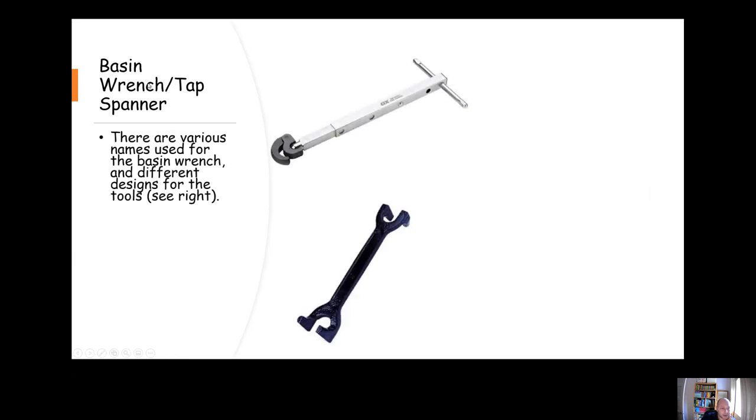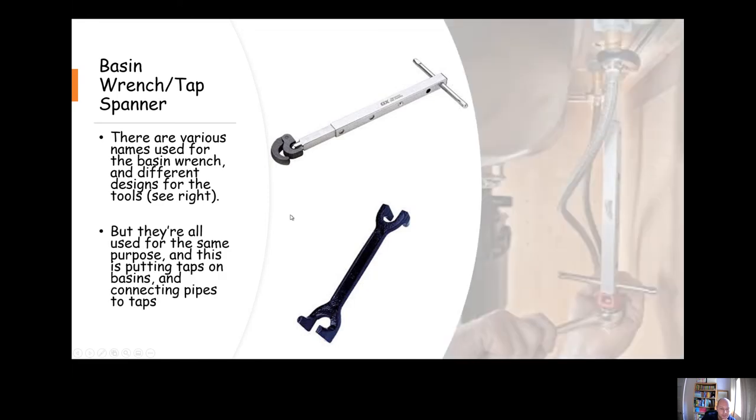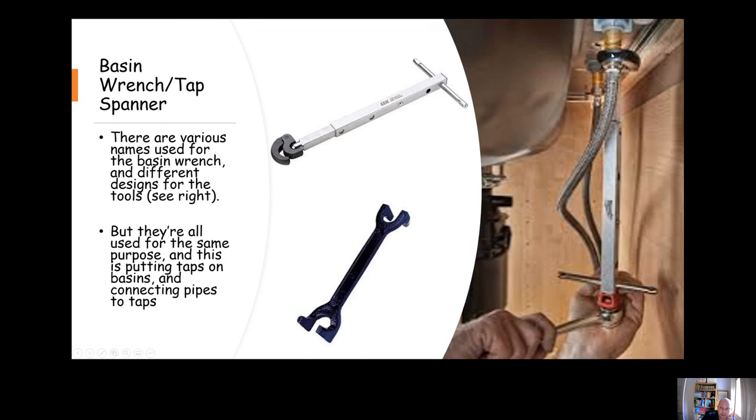Basin spanners, also known as tap spanners or basin wrenches, look like this. They can look really quite dissimilar from one another but they all do the same job. Basically what we use them for is mainly for tightening up fittings onto taps, but we can also use them for fitting the taps themselves onto basins and whatnot.